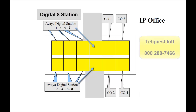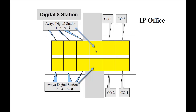The third card — I don't have a picture of it — is the Digital 8 Station card. It has 8 digital extension ports and 4 CO line ports on it as well. However, it does require the optional ATM analog trunk module card to allow the CO lines to work. This is not on the card out of the box — it's optional.